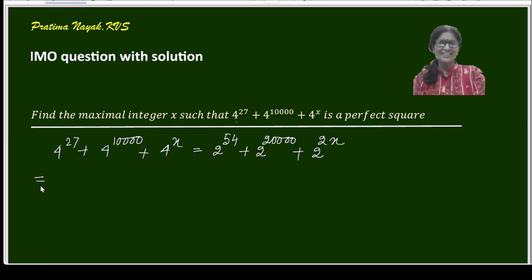Again I can simplify by taking a common factor outside, that is 2 to the power 54. Since it is given that x is maximum, I'll assume that 54 is less than 2x.